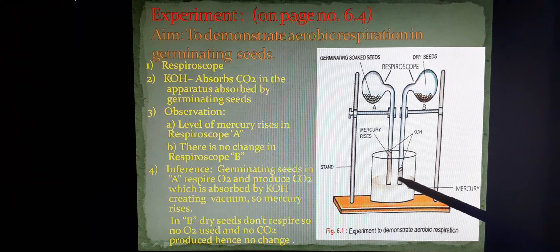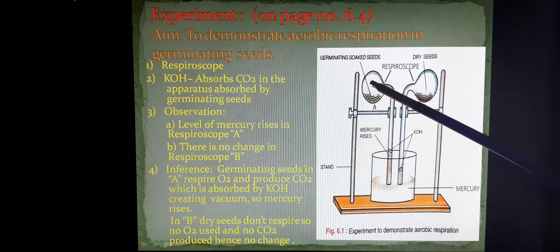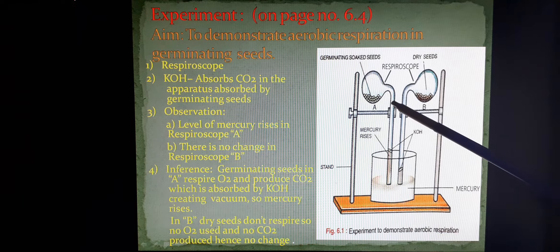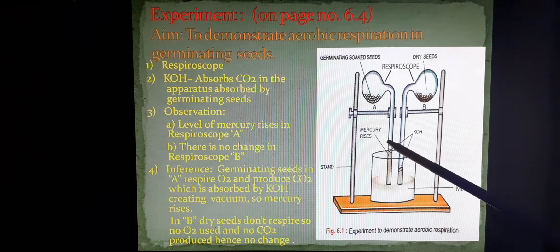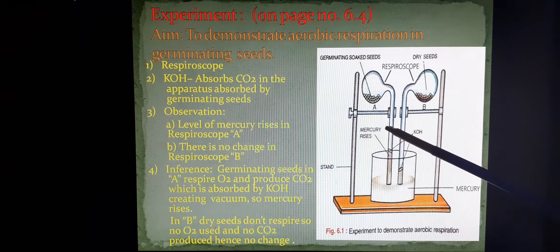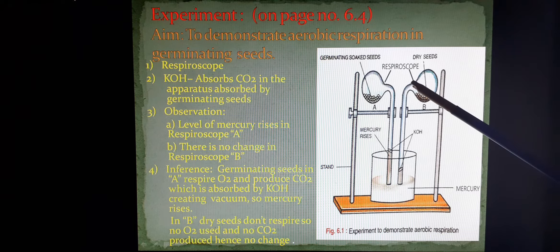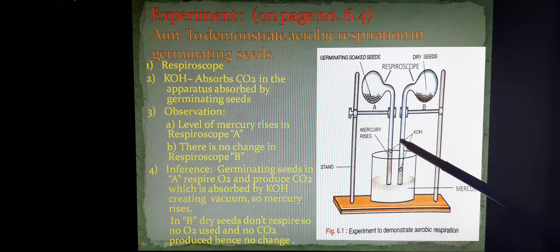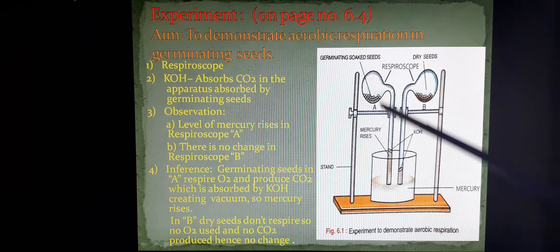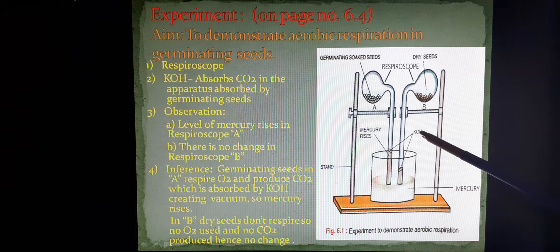The whole setup is placed for a few hours. The germinating seeds keep on germinating and respiring, utilizing the oxygen in the apparatus and releasing carbon dioxide, which leads to a vacuum in this area. Due to which, the mercury in the beaker moves and rises in the tube. In B setup, there was no respiration, so no change and the mercury did not rise up. So through this apparatus, we have explained that during aerobic respiration, oxygen is utilized and carbon dioxide is released, which is absorbed by potassium hydroxide.